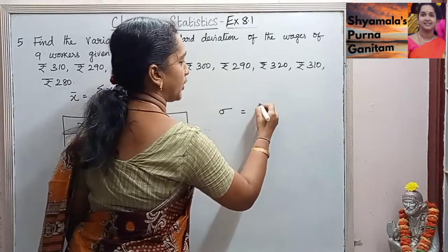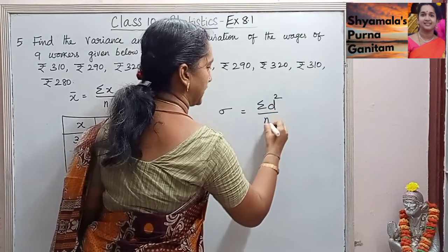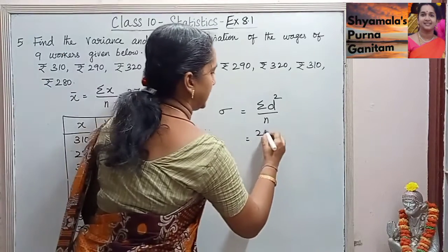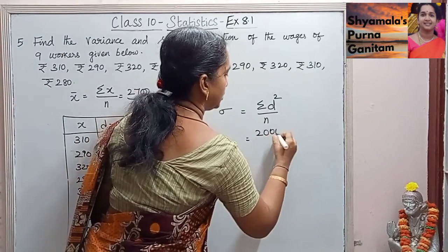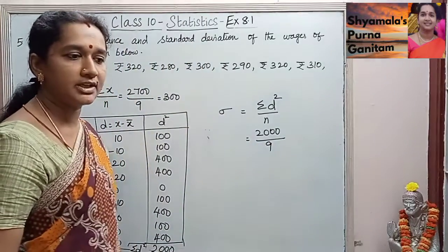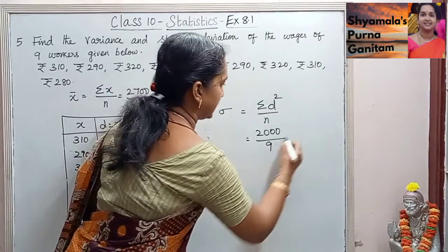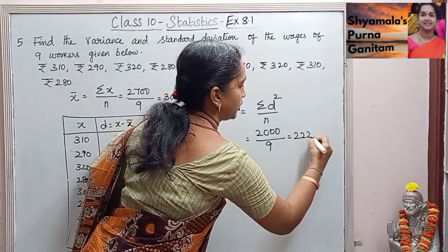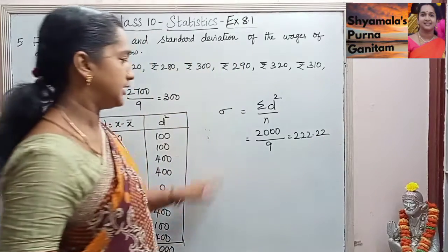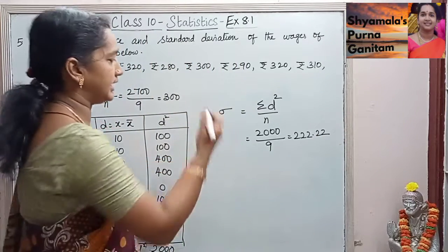The variance formula is σd²/n. Here σd² is 2000, so 2000 divided by 9 gives us 222.22. This is the value of the variance.